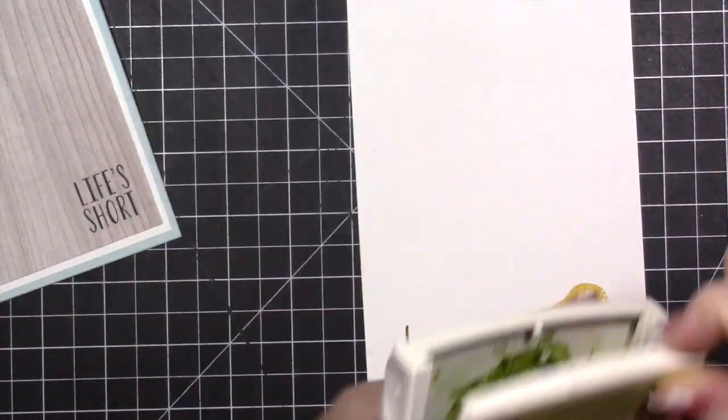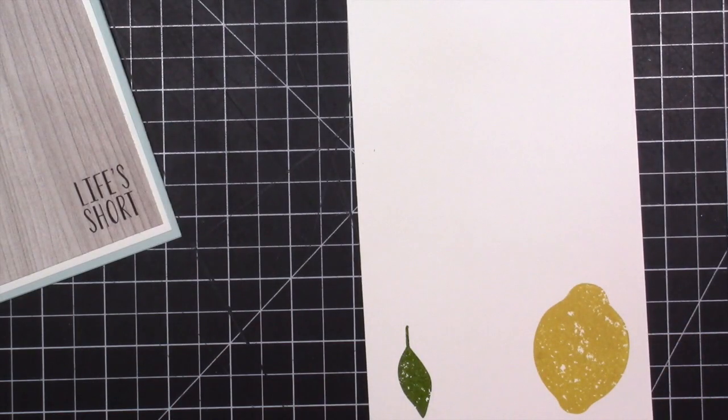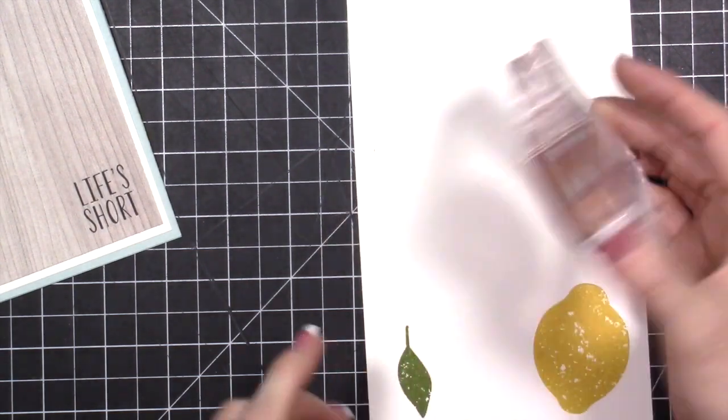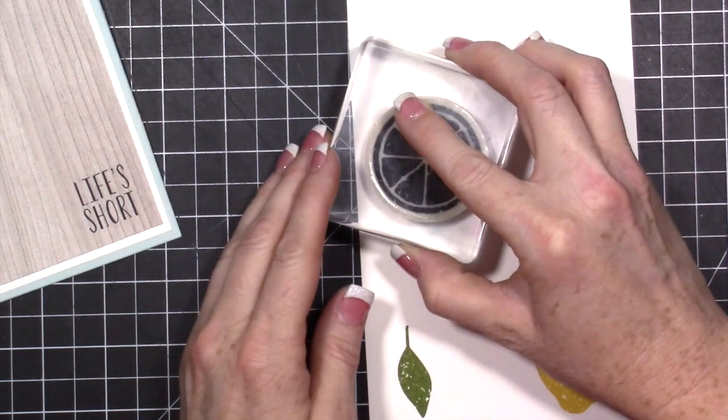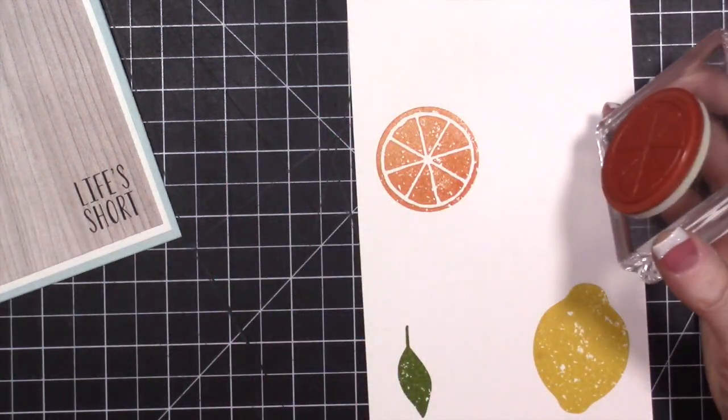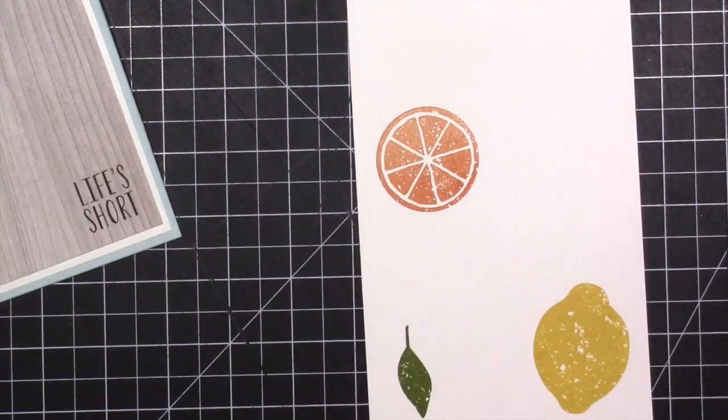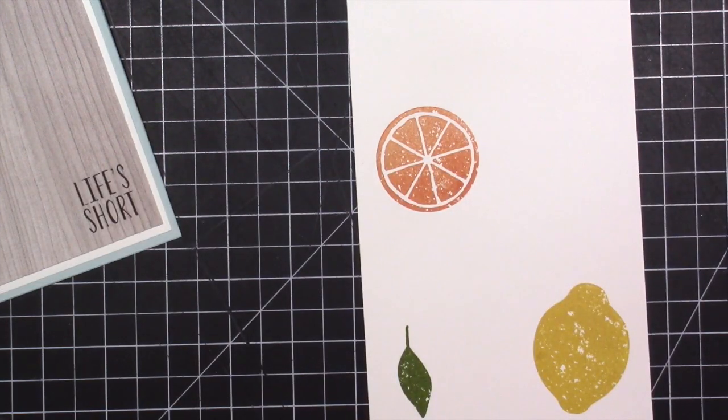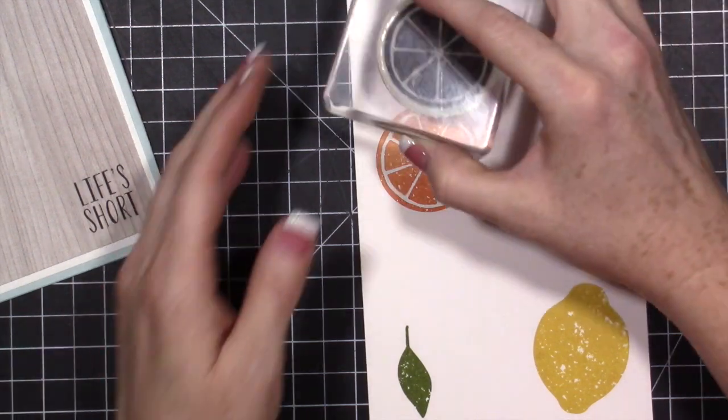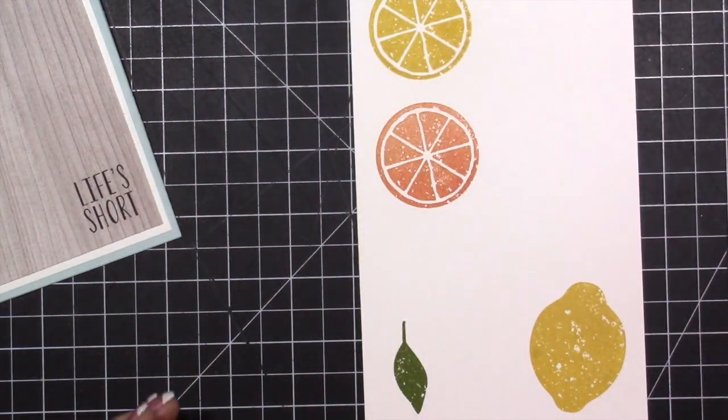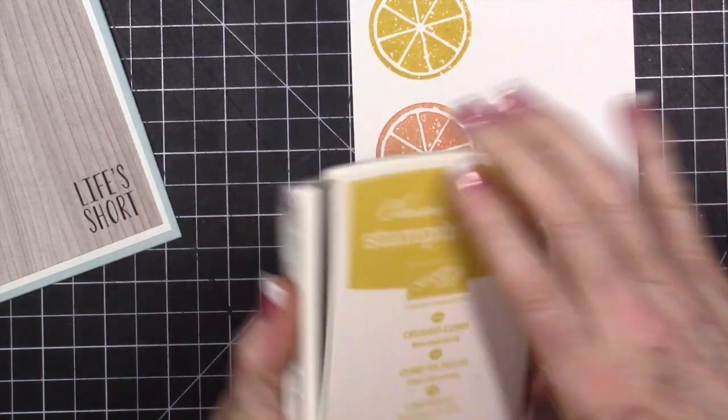We'll close that up and now we are going to grab this image right here and we need an orange one, and then we're going to have to go ahead and clean our block - I mean our stamp - and then we're going to grab a yellow one of them.